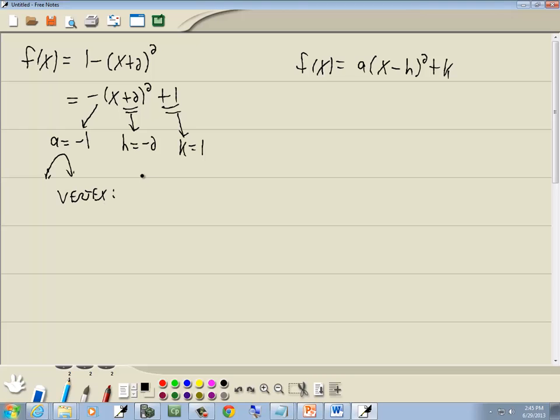If it's in standard form, our vertex is (h,k), which would be (-2, 1). Our axis of symmetry will be x equals the x part of the vertex, which is negative 2. Since the graph opens down, we'll have a max, and it'll occur at our y part of the vertex, which is 1. Or a max of 1, I should say.